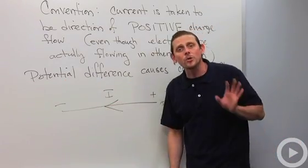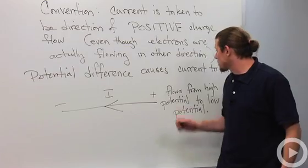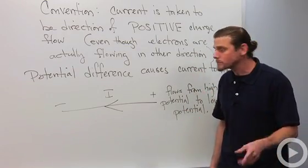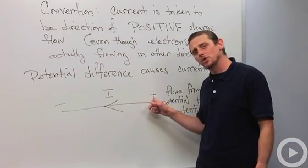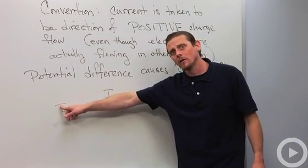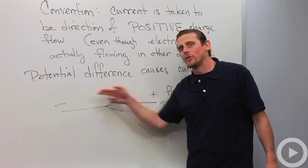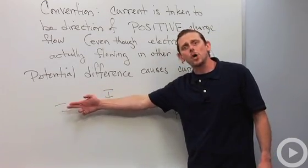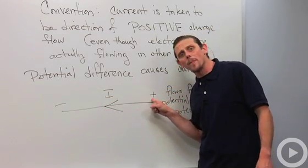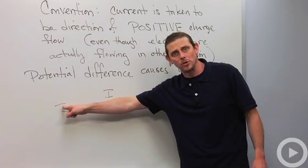All right so potential difference is what causes current to flow. If I've got a high potential over here and a low potential over here then my current is going to go this way because positive charge wants to go away from the high potential and towards the low potential.